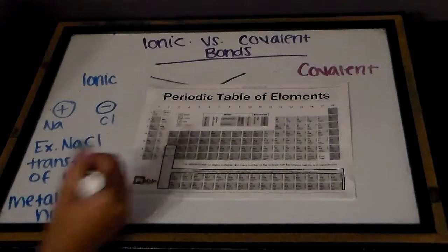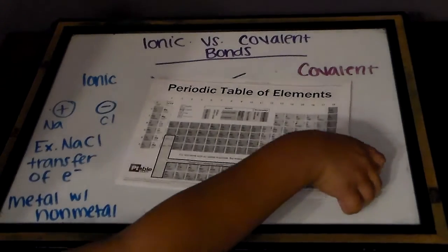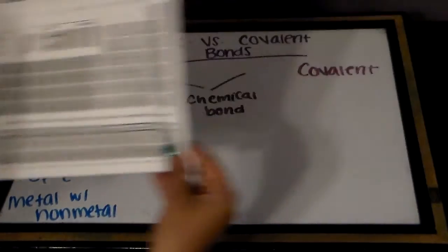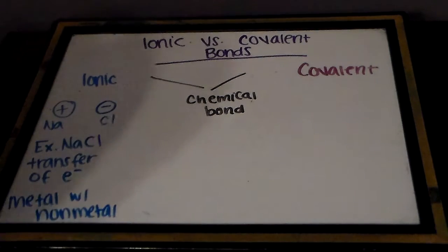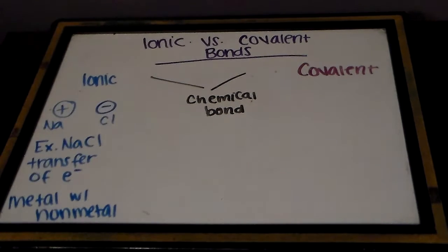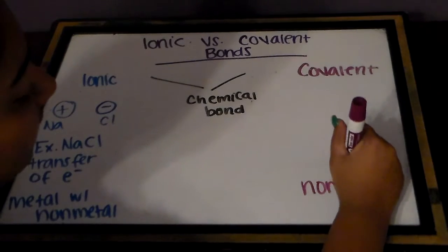We want to make sure that both become stable, so Na transfers one of its electrons to Cl so that Cl has eight. So in ionic bonding we have a transfer of electrons. You will also notice in ionic bonding that we have a metal and a non-metal. So another way we can think of ionic bonding is metals bonding with non-metals. On the other side of the spectrum we have covalent bonding, which is not metals and non-metals — it's actually non-metals and non-metals together.